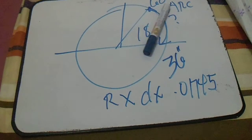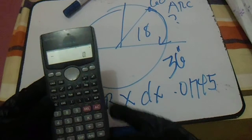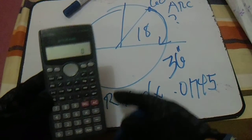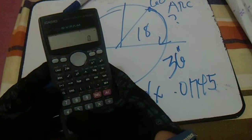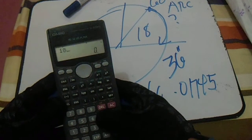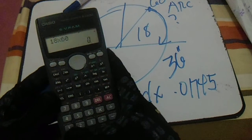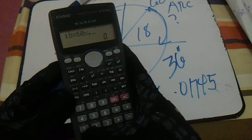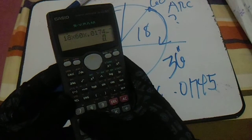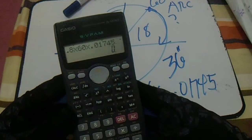I will get my calculator and let's compute that one. So we have a formula, radius. Our radius is 18, and then multiply it by degree, 60 degrees, and multiply it by 0.01745. So our answer is...